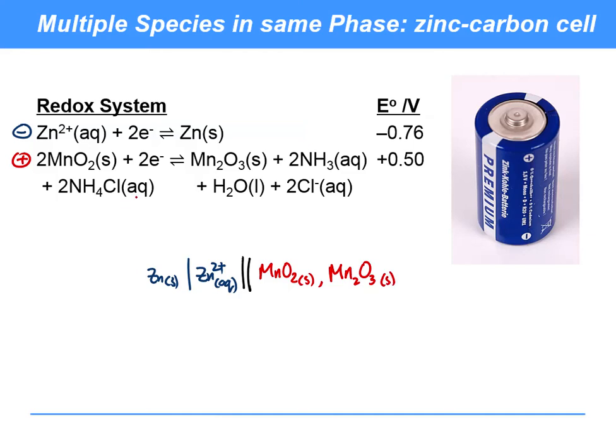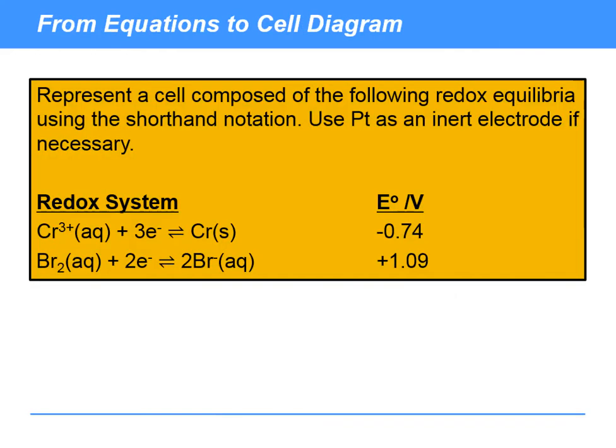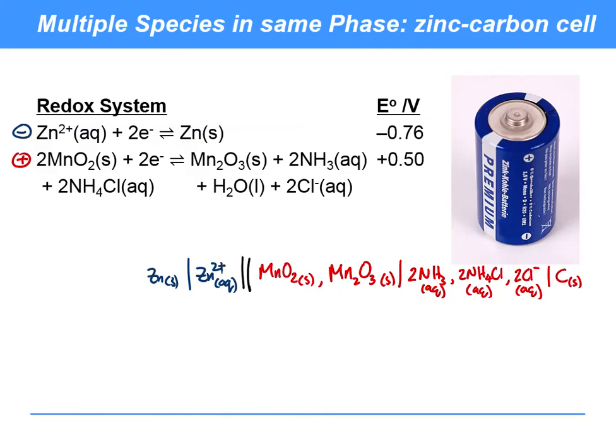We've got some other species to worry about here. We've got our water, which is a liquid. Now usually we'd probably leave water out because water is present just purely for the balancing of the atoms. So we'll leave the water out, but we can put the 2NH3, 2NH4Cl, and the 2Cl- which are all aqueous on here like so. And in a zinc-carbon cell, it is actually a carbon electrode that is used here, and so we're going to put a solid bit of graphite in there to show it. So that's a much more complicated example, but the key thing to remember here when we're doing this is that commas separate species in the same phase.